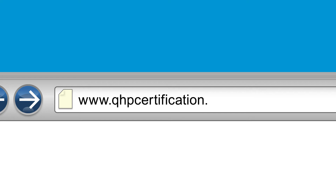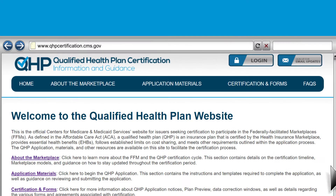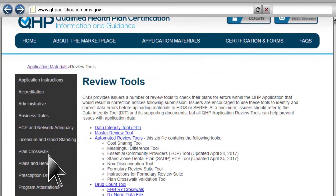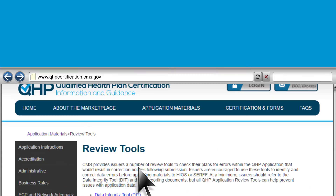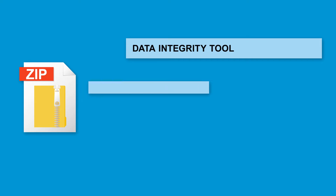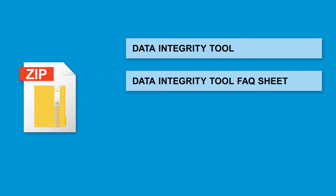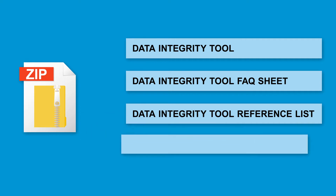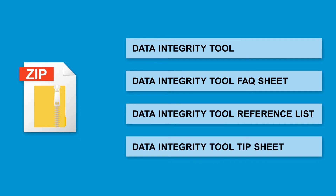To download the Data Integrity Tool, visit www.qhpcertification.cms.gov, click on Application Materials, then Review Tools. Find and click on the Tools link. A zip file will be downloaded to your computer. Within this zip file, you'll see the Data Integrity Tool, the Data Integrity Tool Frequently Asked Questions Sheet, the Data Integrity Tool Reference List, and the Data Integrity Tool Tip Sheet. Carefully read the FAQ Sheet and Tip Sheet before using the tool.